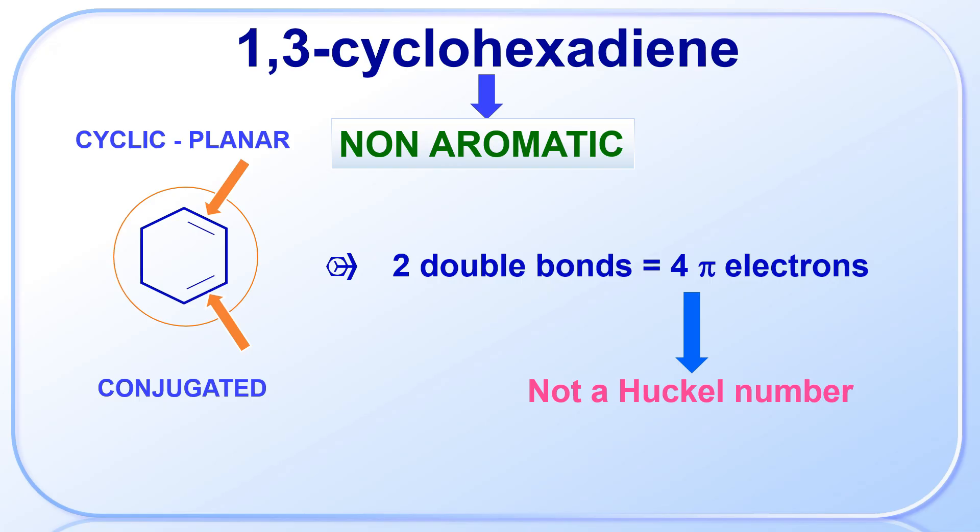Now comes the question: why not anti-aromatic? Cyclobutadiene, which also has 4 pi-electrons, is said to be anti-aromatic. So why do we call 1,3-cyclohexadiene non-aromatic instead?